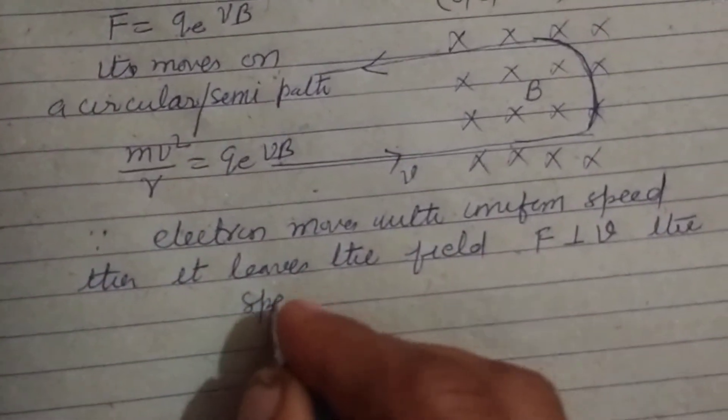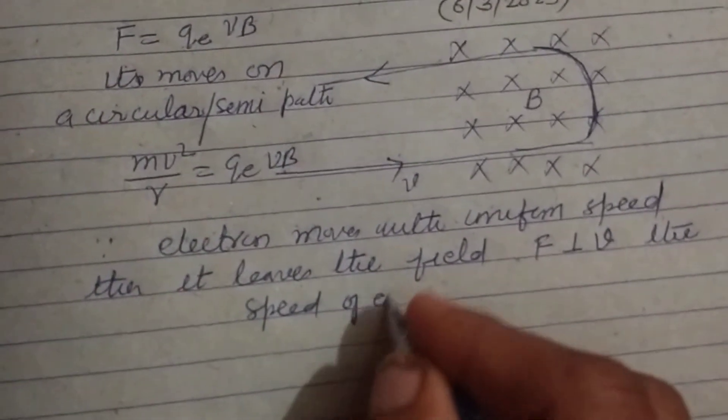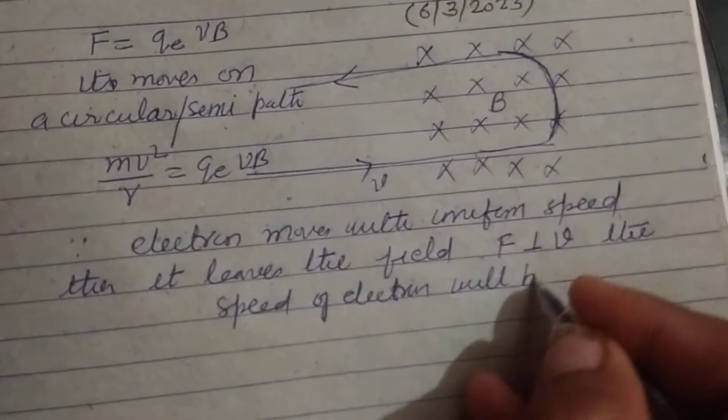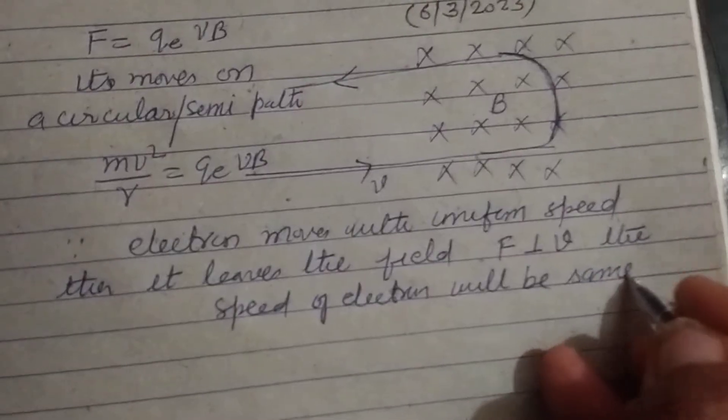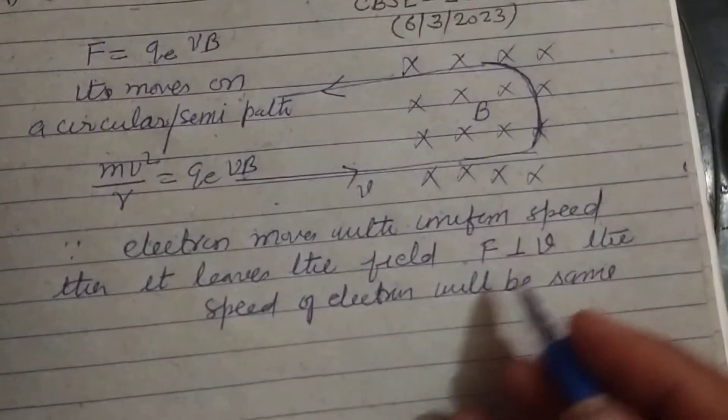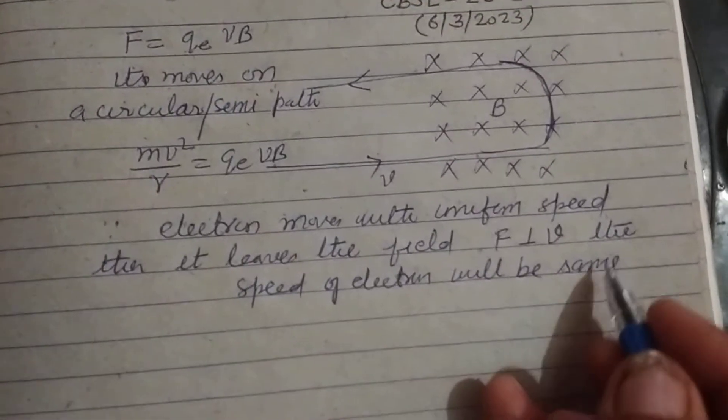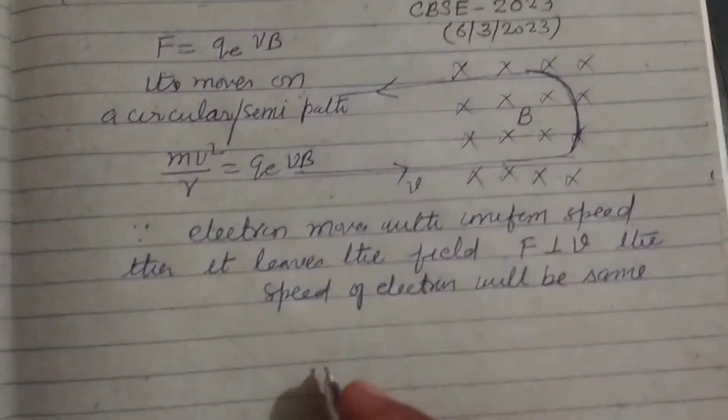The speed of the electron will be the same because no work is done by the field on this electron. When it comes out, it has the same velocity.